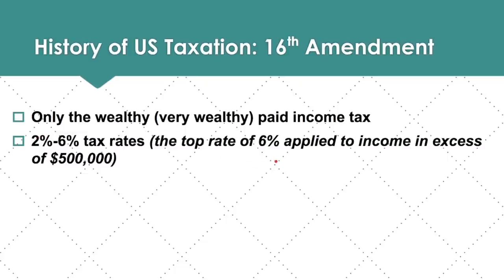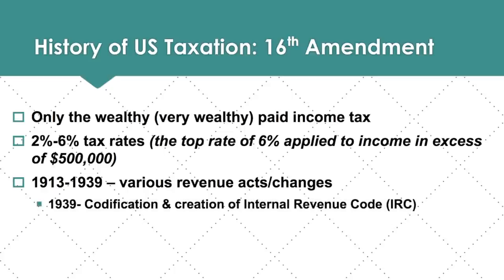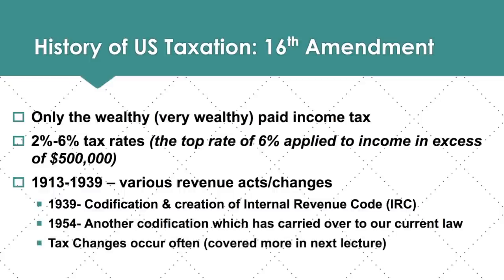That top six percent rate only applied to incomes over $500,000 in their money. From 1913 to 1939, going into the war, they needed more income. In 1939 they did a codification and created the Internal Revenue Code — the IRC — which we'll definitely refer to in this class. You can always look the IRC up. In 1954, there was another codification, which is very much what we have now. Tax changes occur often.